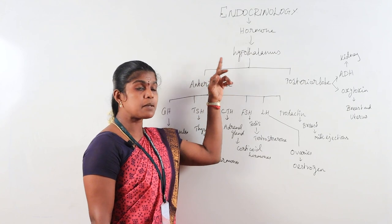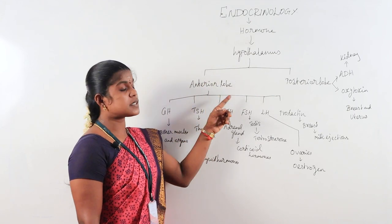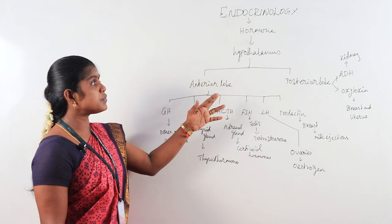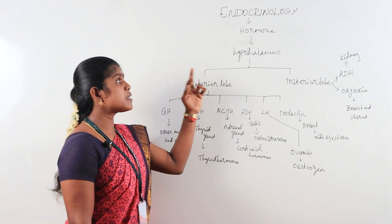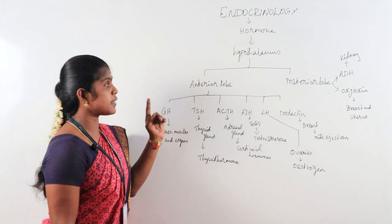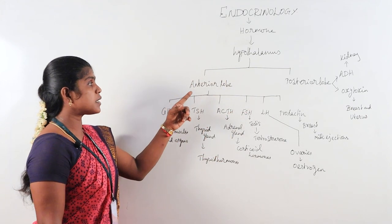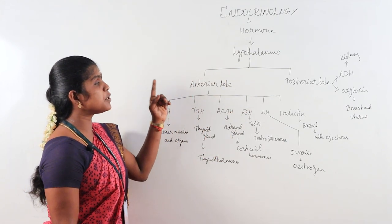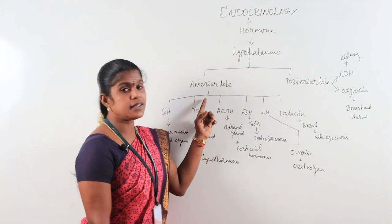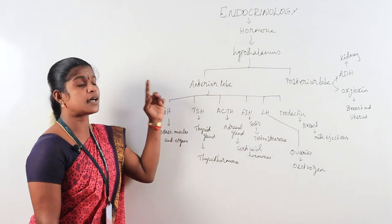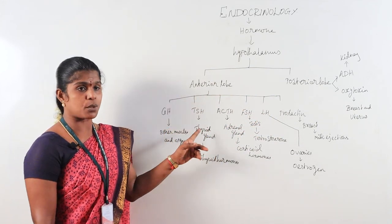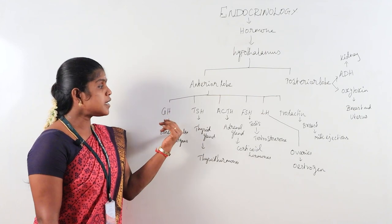The hypothalamus and pituitary are the major king of the glands. The pituitary is divided into two categories: first is anterior pituitary and second is posterior pituitary. Anterior pituitary secretes six major hormones: GH, TSH, ACTH,